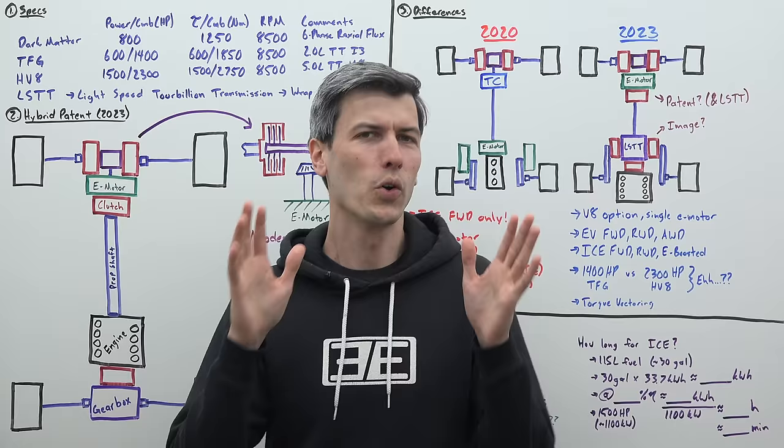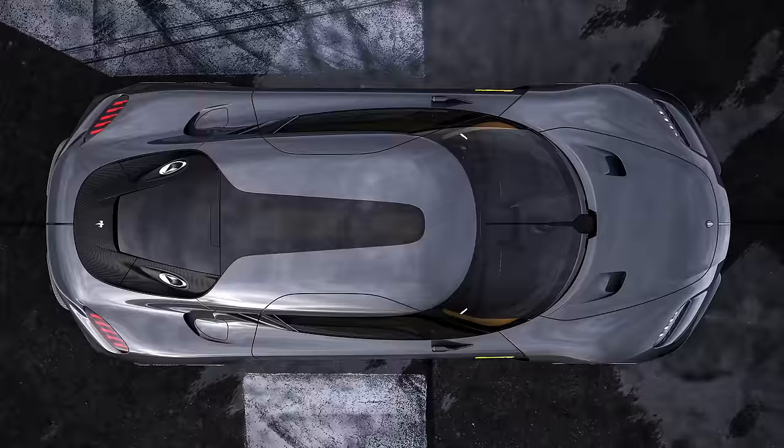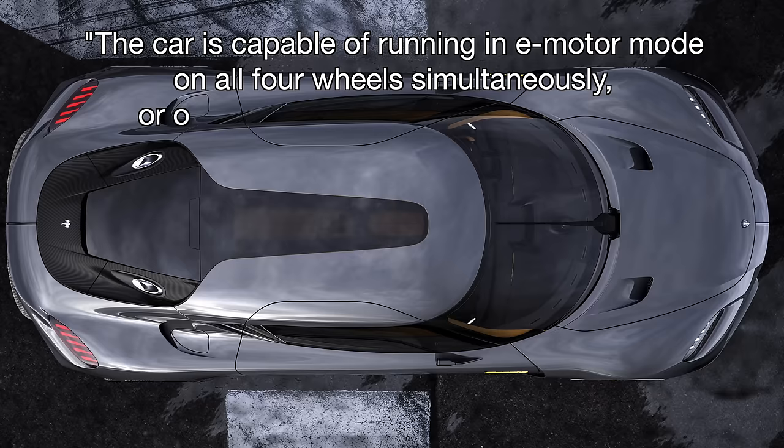But the excitement doesn't end there. Christian von Koenigsegg said something very interesting during the Gamera presentation which I'll quote: the car is capable of running an e-motor mode on all four wheels simultaneously or on the front axle or on the rear axle with full torque vectoring.